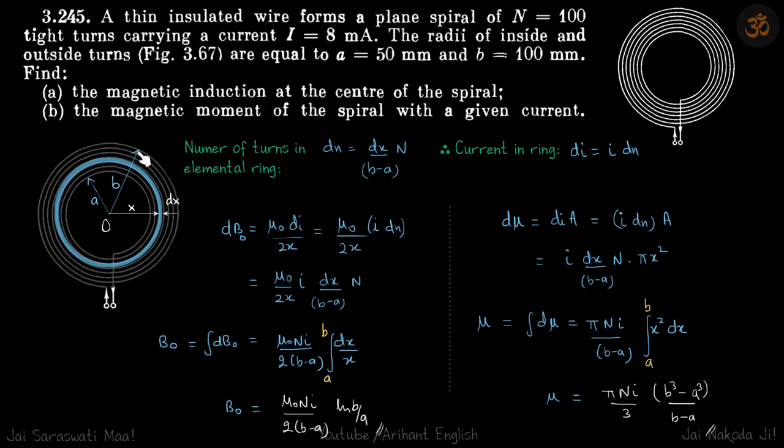By unitary method, in dx width, the number of turns will be dx by b minus a times N.